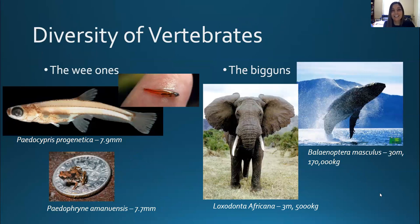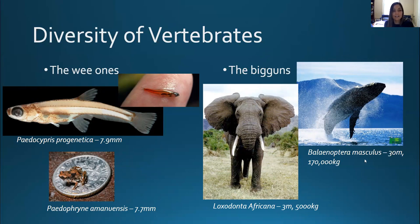Across all vertebrates there is amazing diversity in many ways. One very easy way to see this is diversity in size. Some fish and frogs are less than a centimeter in size, whereas at the other end of the spectrum, the largest land animal — an elephant — can be over 5,000 kilograms. And the largest vertebrate on earth, the blue whale, is over 170,000 kilograms. A kilogram is 2.2 pounds, so elephants can be more than 10 tons — ginormous.